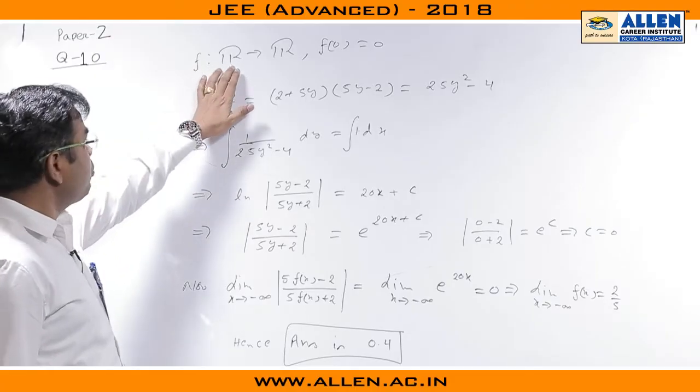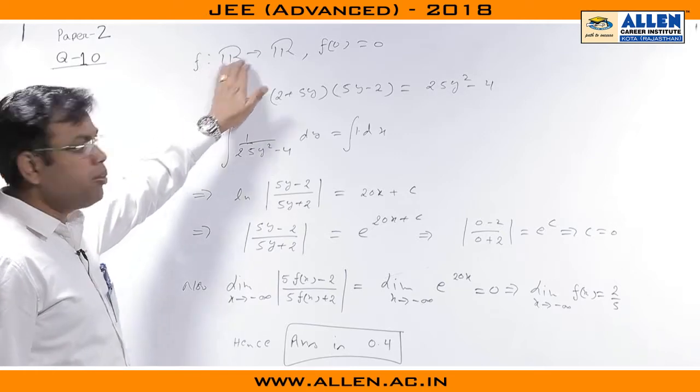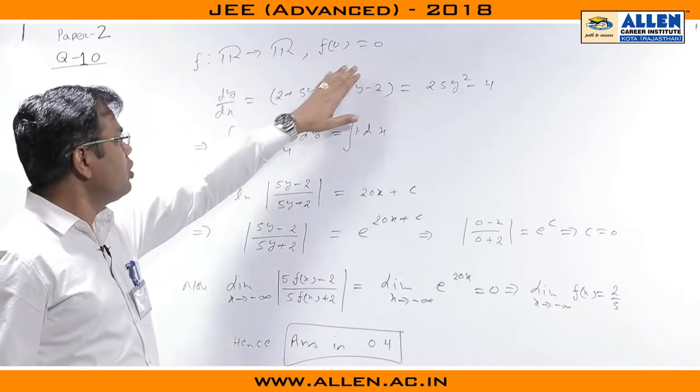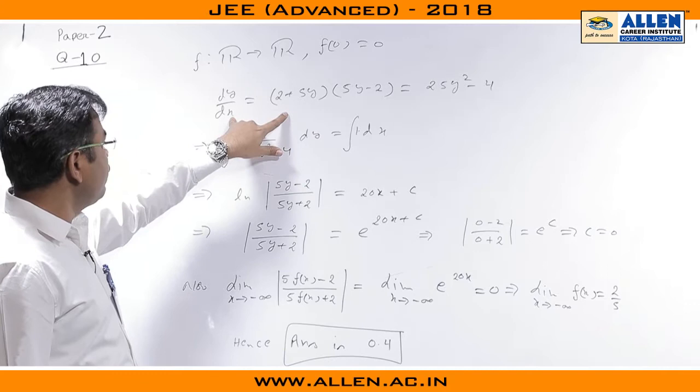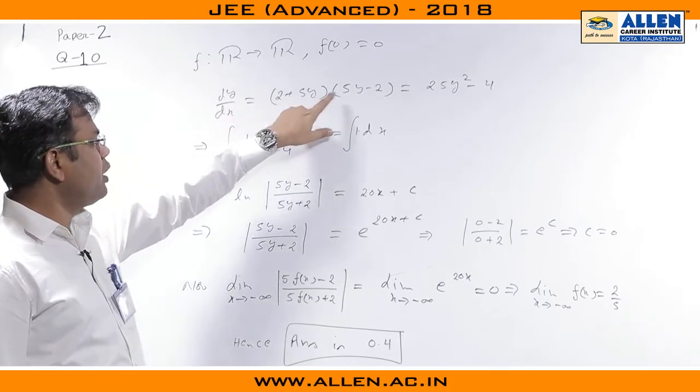In problem number 10, we are provided with the function defined from R to R with f(0) equal to 0 and an accompanying differential equation dy/dx equal to (2 + 5y)(5y - 2).